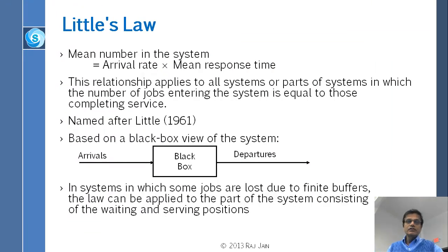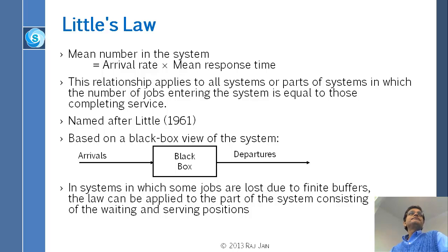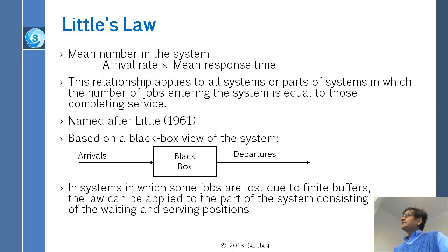Little's law states that the mean number in the system equals the arrival rate times the mean response time. This relation applies to all systems or all parts of a system in which the number of jobs entering equals the number completing service. As long as you don't lose jobs inside the box, this rule applies. The proof was provided by Little in 1961 — that's why it is named Little's law. It does not assume anything about the distributions; the only assumption is that nobody is killed inside.